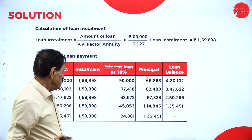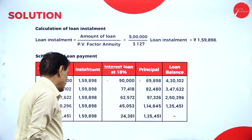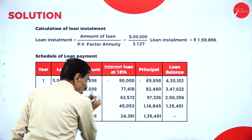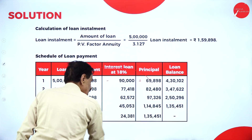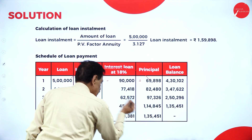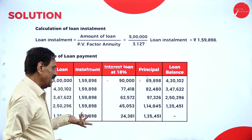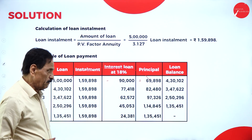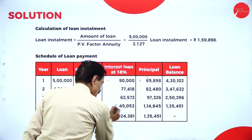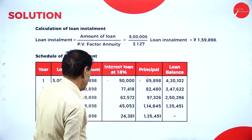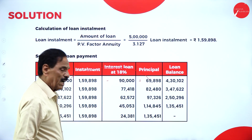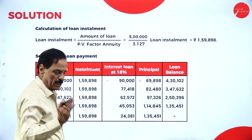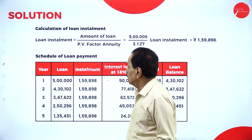In the last year, the balance brought down is 1,35,451. You write the principal money as the installment amount. The difference between these two we can take as interest — which comes to 34,381. There are two approaches: either deduct the balance or calculate the interest directly. One or two rupees may be a rounding difference.